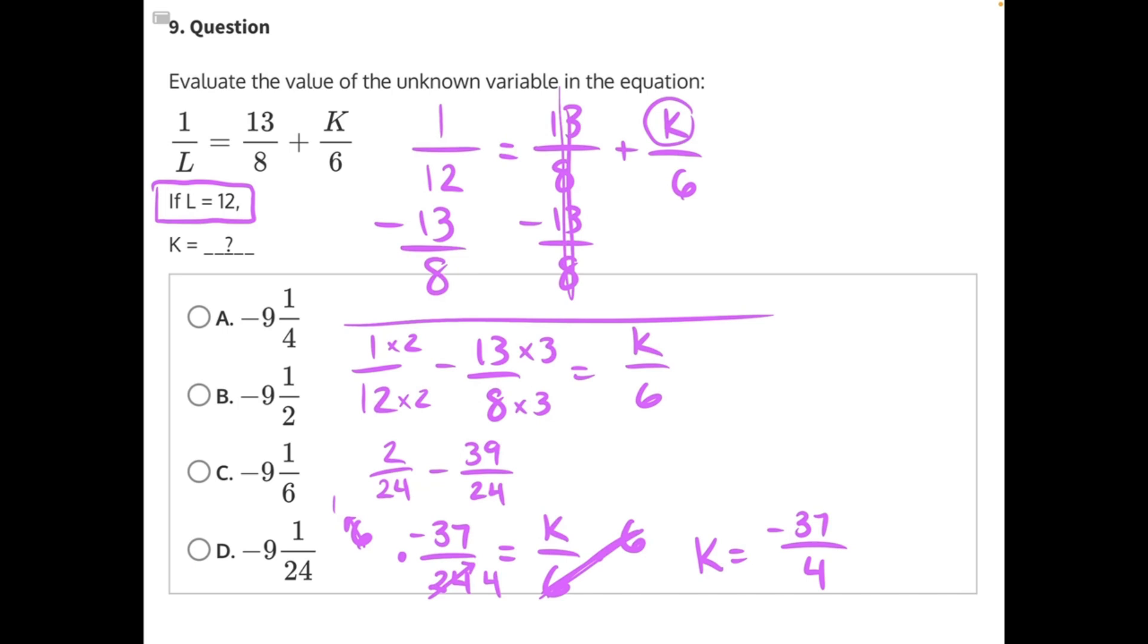Now the only thing we have left to do is simplify this fraction. 4 can go into 37 nine times with 1 left over, making A our correct answer.